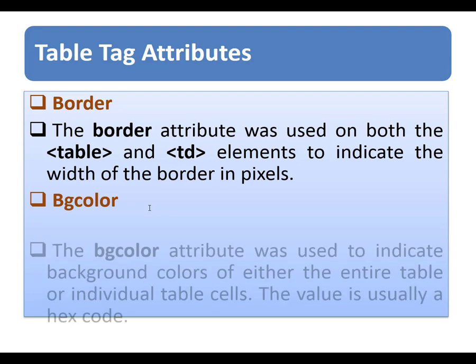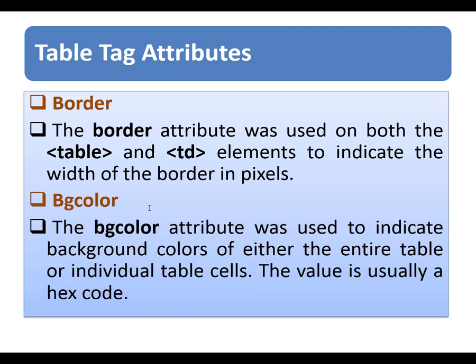The next attribute is bgcolor. The bgcolor attribute is used to indicate the background color of either the entire table or individual table cells. The value provided is usually in a hex code.